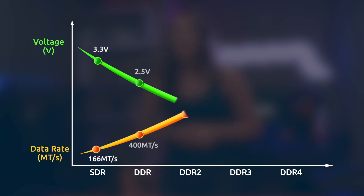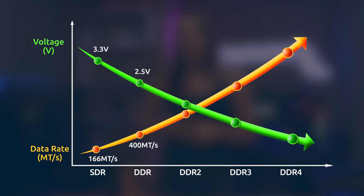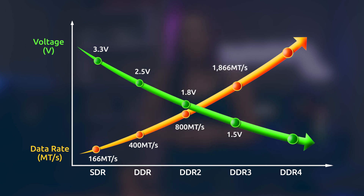Currently, there are four generations of DDR, with each successive generation increasing in speed and efficiency. Compared to regular SDRAM, which only has a transfer rate of 100 to 166 megatransfers per second, DDR has 266 to 400 MTS, DDR2 has 533 to 800 MTS, DDR3 has 1066 to 1600 MTS, and DDR4 has 2133 to 3200 MTS.